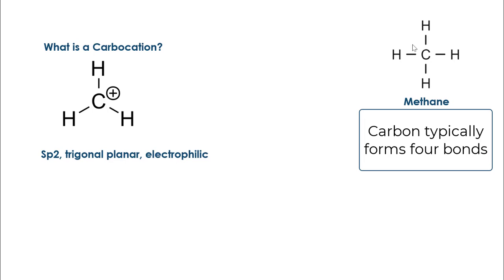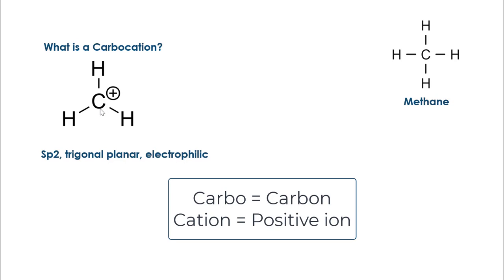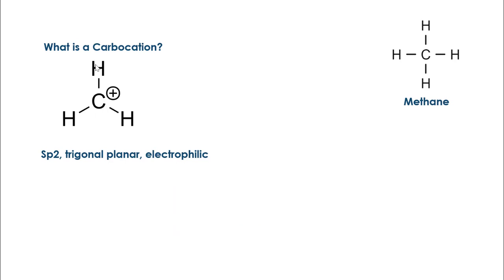However, if you take one of the bonds away from carbon, you're going to get a carbocation. The definition of a carbocation is a positively charged carbon atom that only has three bonds. You can see that this carbon is only bonded to three hydrogens. Because carbon would like to have an additional bond, having only three is going to make it electron poor or electron deficient, and that's why it has the positive charge.